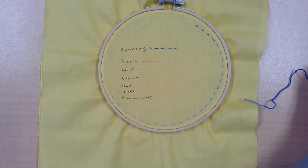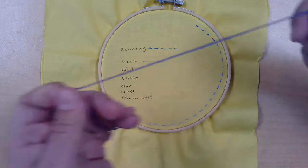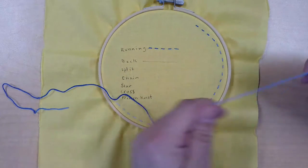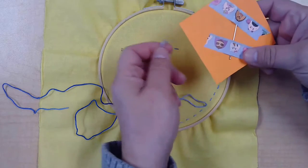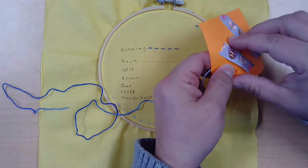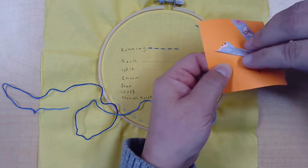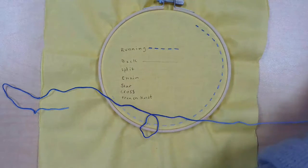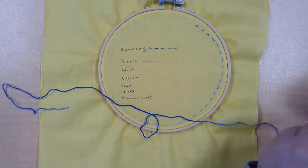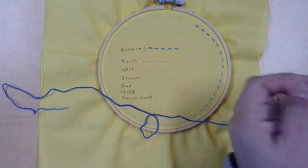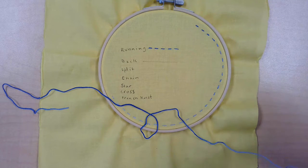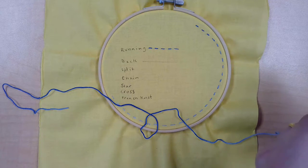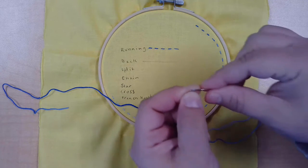To begin, you're going to cut off a piece of your thread, your floss. You don't need to split it. Make sure you get your needle off of your card where you're storing it for safety. I'm keeping mine thick so that you can see it better in the video. Go ahead and thread your needle.